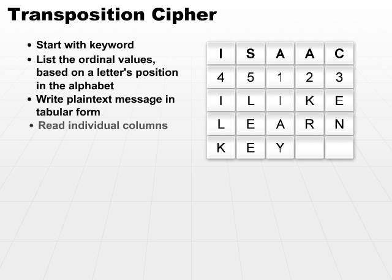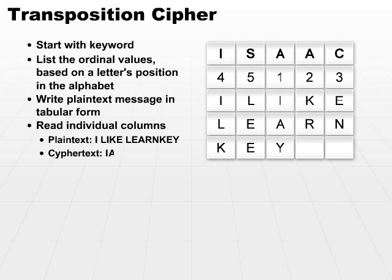Here we have I like learn key as my plaintext. Then I read the individual columns, starting with column one. I, A, Y. What I have done is I've broken my ciphertext up into five character chunks. Now clearly, I only have 13 characters. So the first column is I, A, Y. The second column would be K, R. Well, that's my five characters. The fact that the last one is blank doesn't really matter. I use I, A, Y, K, R.